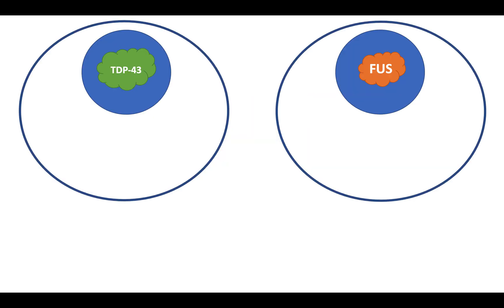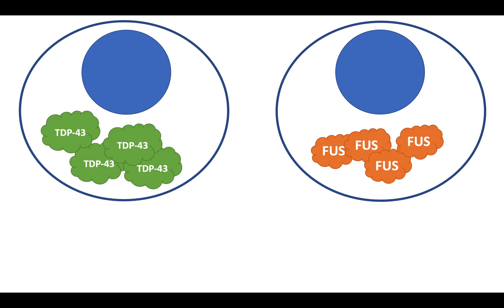In my project, I'm looking at two proteins that interact with this complicated system of RNA in the cell. These two proteins can come out of the nucleus where they normally are and accumulate in the cytoplasm in ALS. You only need one of these proteins to go wrong to develop disease.